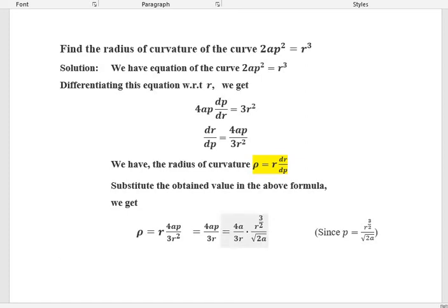Now, by simplifying this, we get ρ = (2/3)√(2ar), which is the required radius of curvature.